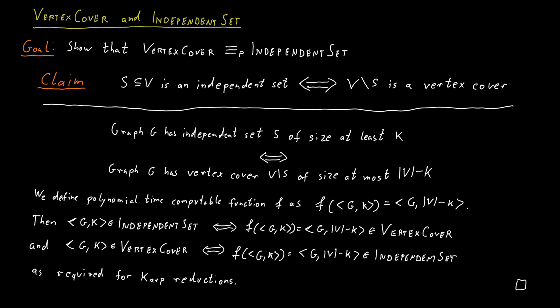Lastly, note that this reduction can be computed in polynomial time. In fact, we don't need to modify the graph at all—we just leave it as is. The only thing we need to do is count the vertices in the graph and subtract K from that number. Clearly, this can be done efficiently.